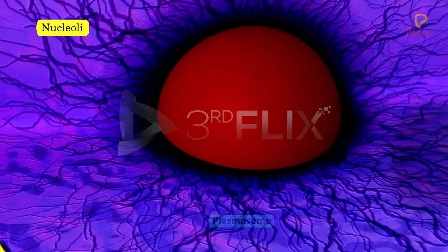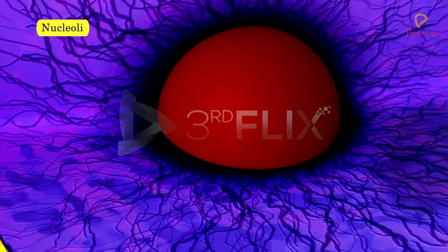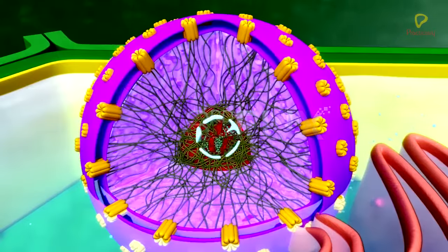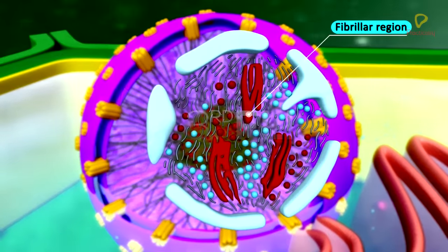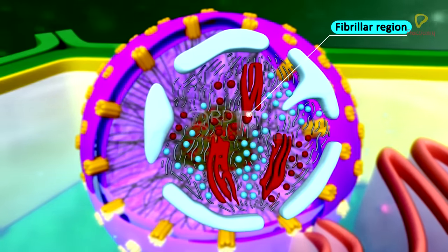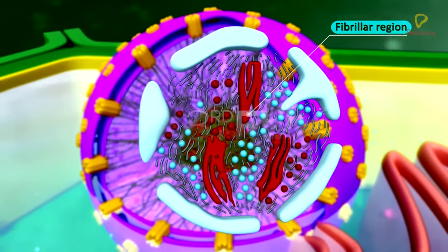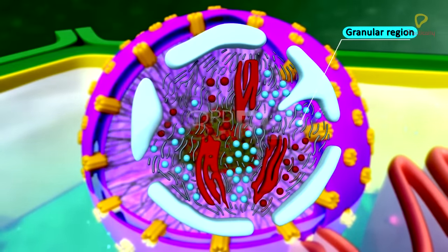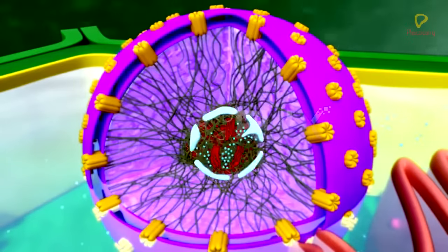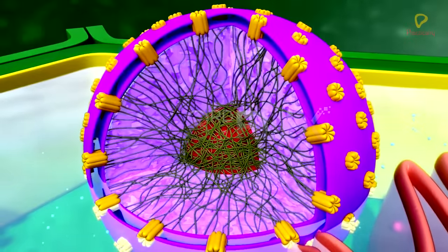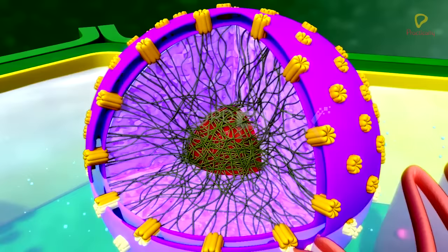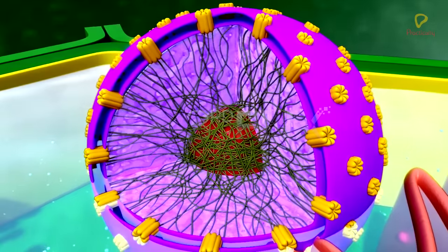A nucleus may contain one or two or many nucleoli. A nucleolus has central fibrillar region comprising RNA, proteins and little amount of DNA and a peripheral granular region which is made up of proteins and RNA. The content of nucleolus is continuous with the rest of the nucleoplasm as it is not a membrane-bound structure.